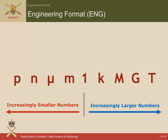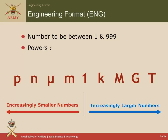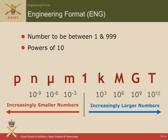So, in engineering format — just to reiterate — the number that we're going to write will be between 1 and 999, and then almost certainly be multiplied by 10 to a power. If we've got a large number, it's going to be 1 times 10 to the power 3, 6, 9, or 12. If it's a small number, it would be 1 times 10 to the power minus 3, minus 6, minus 9, or minus 12.